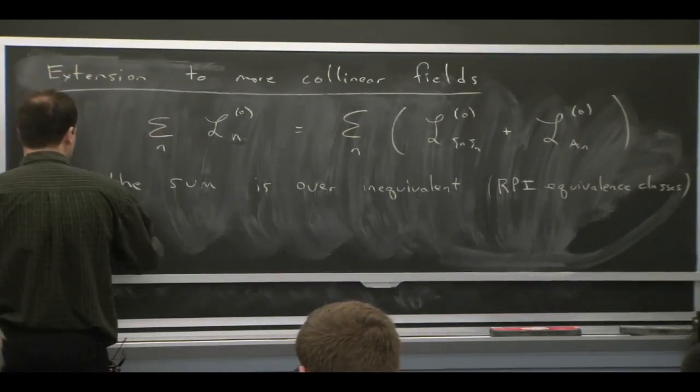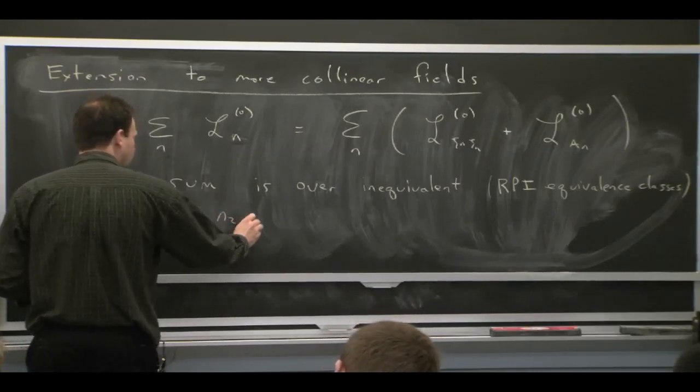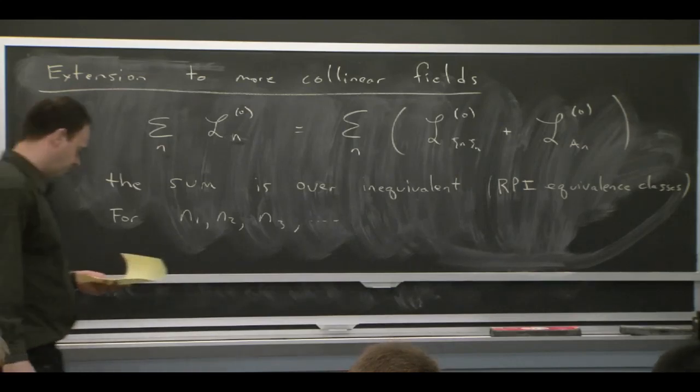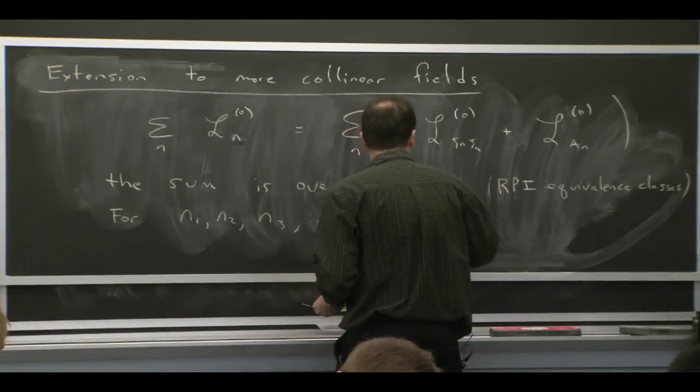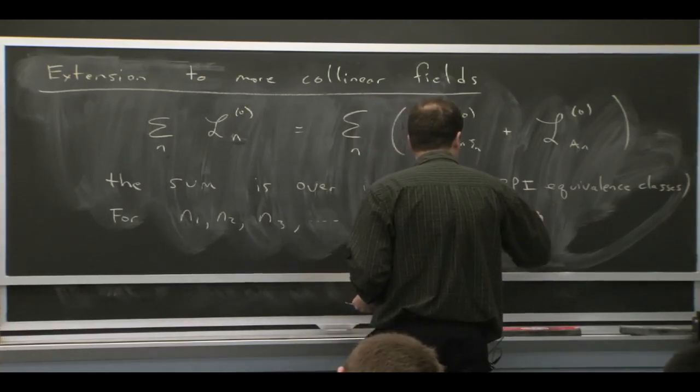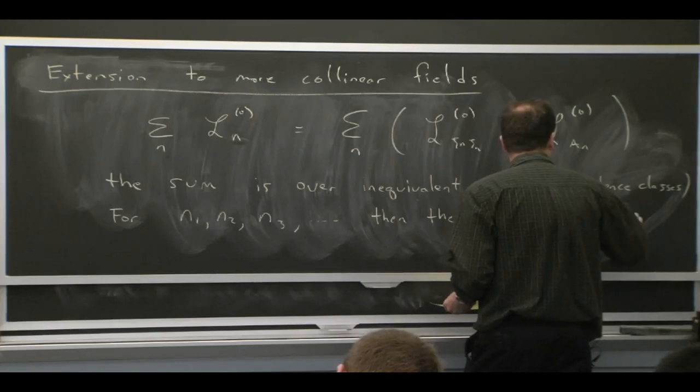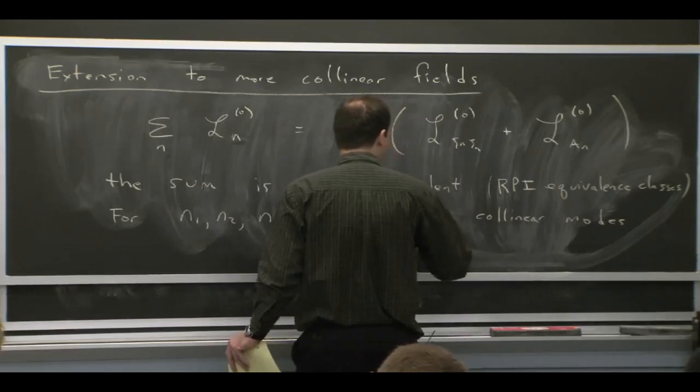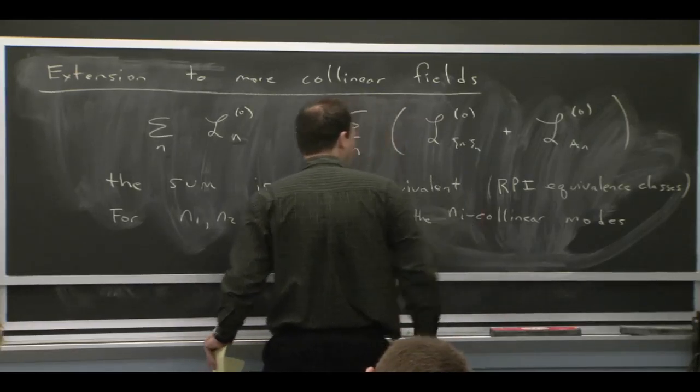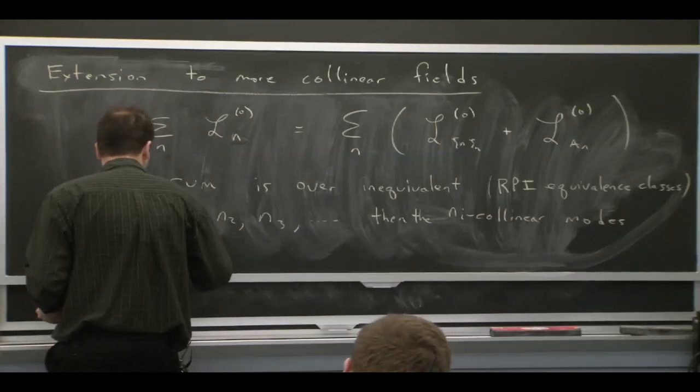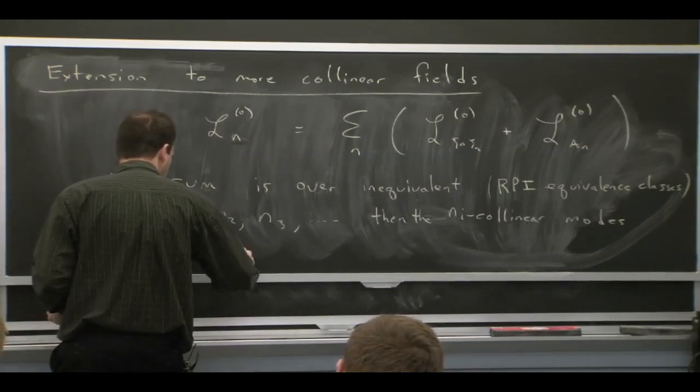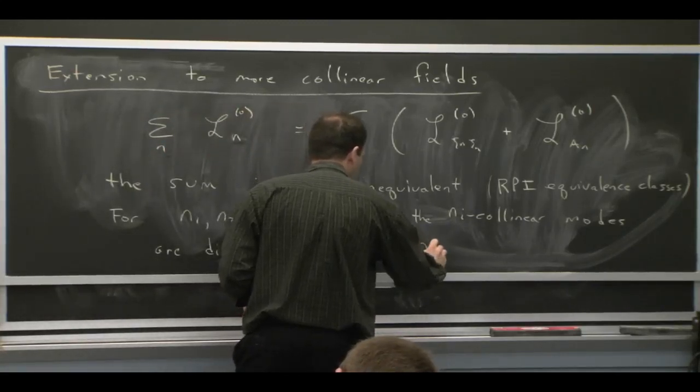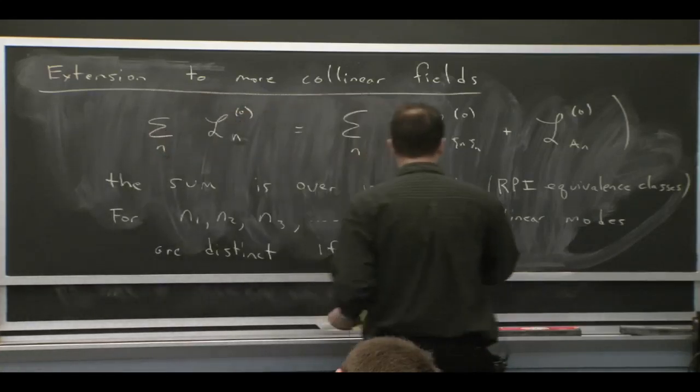So let's just imagine that we have some n's, n1, n2, n3. And we can ask the question, what makes them equivalent or inequivalent? So let me call them that the ni collinear modes for any i are distinct if, and there's a condition, that if I dot two of these n's together, they should not be close together.